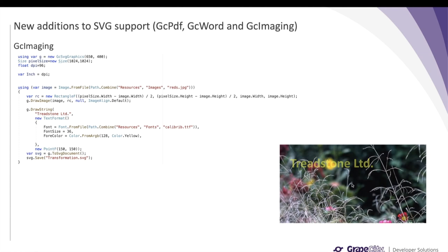In this example, we take an image in a different format — in this case a JPEG image — and use the GcSvgGraphics class to draw text over that image, then convert the whole graphics into an SVG document and save it to SVG image format. We load an image, define a graphics object of type GcSvgGraphics, draw that image over the graphics at a particular area, draw some text over it with defined text settings, convert the graphics to an SVG document, and then save it to SVG image format. This demonstrates how the new methods help load an image in any format, draw graphics or text over it, and save the whole thing into SVG format.